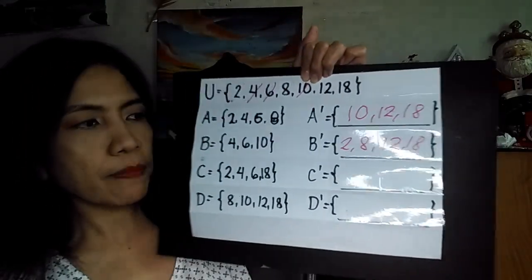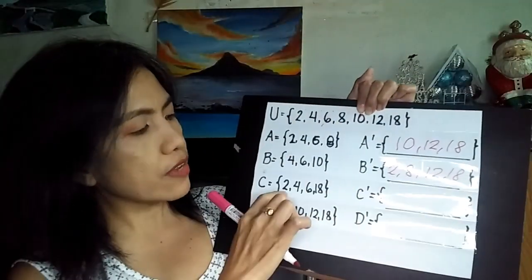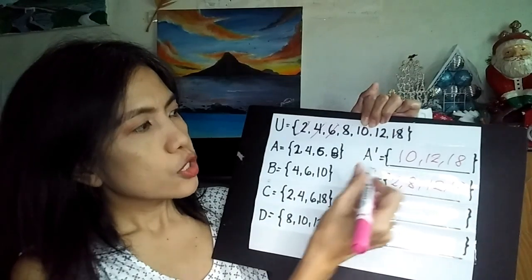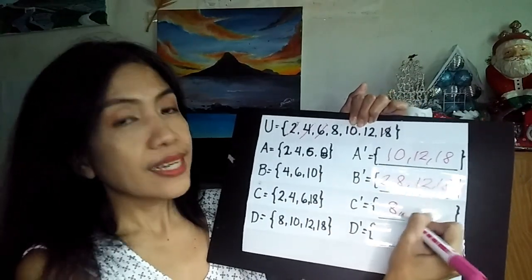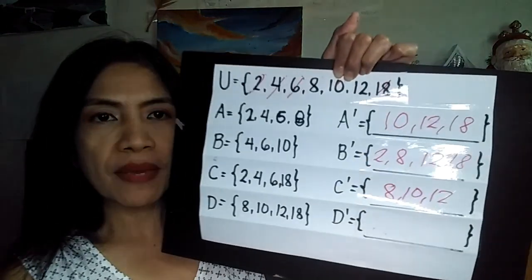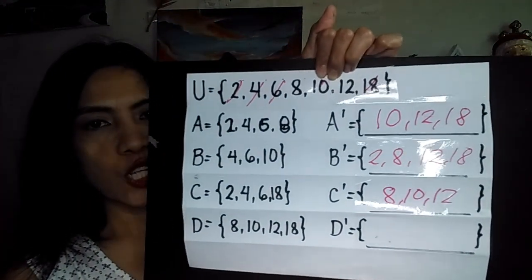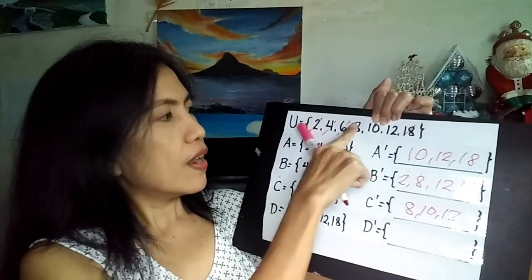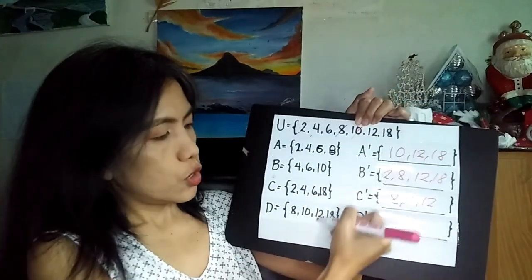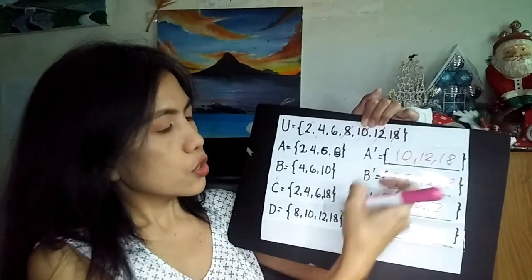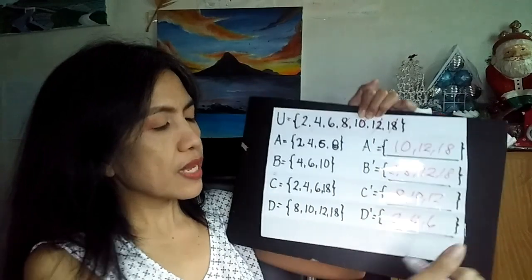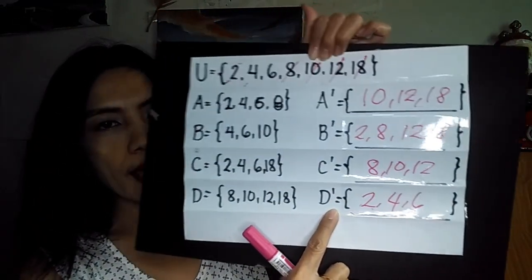Next, let's look for the C complement. The given elements are 2, 4, 6, and 18. So the elements without a cross are 8, 10, and 12. Therefore, the C complement is 8, 10, and 12. And for the D complement, the given is 8, 10, 12, and 18. The remaining elements are 2, 4, and 6. So the D complement is 2, 4, and 6.